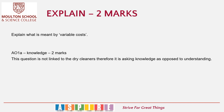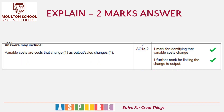The next question is: explain what is meant by variable costs, for two marks. This is another knowledge mark — it could be about any company. You've got two marks, so that's indicating it needs to be a fairly decent sentence to make sure you have fully explained what variable costs are. From the mark scheme: one mark for identifying that variable costs change, and one mark for linking it to output. The exemplar answer is: variable costs are costs that change as output/sales changes.